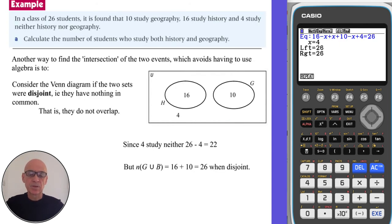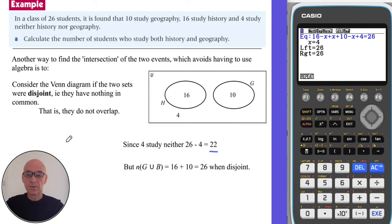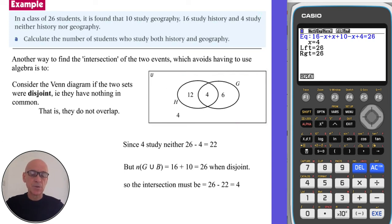Another way to find the intersection, which avoids writing an equation and using algebra, is to consider the Venn diagram if the two sets were disjoint — i.e., they don't overlap. We know 4 students study neither, so subtracting 4 from the total of 26 leaves 22 students who study one or both subjects. Adding the 16 history students and 10 geography students gives 26 if they were disjoint, but we only have 22. Subtracting 22 from 26 confirms that 4 students study both.